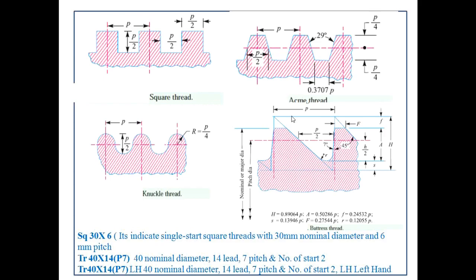Square threads, like Acme threads, knuckle threads, and buttress threads, have high efficiency and are widely used for transmission of power in both directions. Such threads are usually found in feed mechanisms of machine tools, wall spindles, screw jacks, etc. Square threads are not as strong as V-threads but offer less frictional resistance to motion. The pitch of square threads is often taken as twice that of BSW threads of the same diameter. The depth of the thread is P divided by 2.